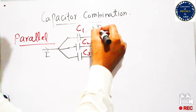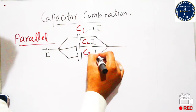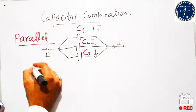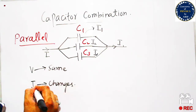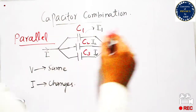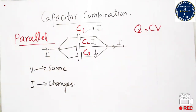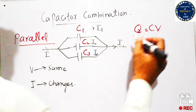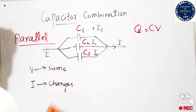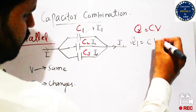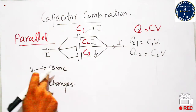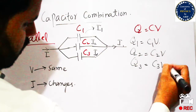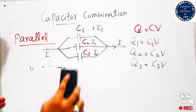In parallel combination, the current divides but voltage remains the same across all branches — all students should remember this. The charge on each capacitor is calculated using Q = CV. Since voltage remains the same, Q1 = C1·V, Q2 = C2·V, and Q3 = C3·V, where V is the common voltage.